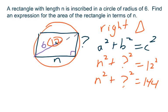And then if I want to solve for that something to find out what this actually is, I subtract n squared to both sides. And I have question mark squared equals 144 minus n squared.